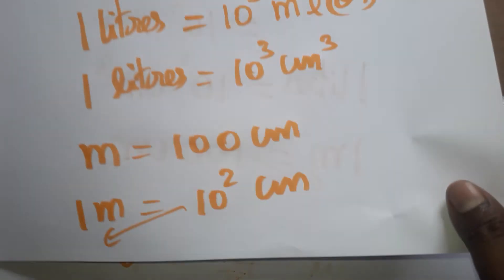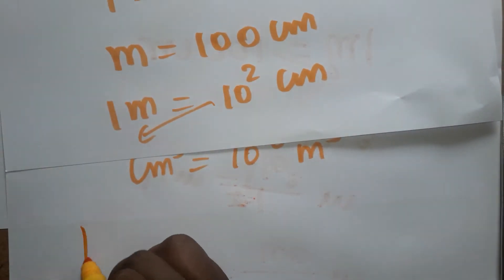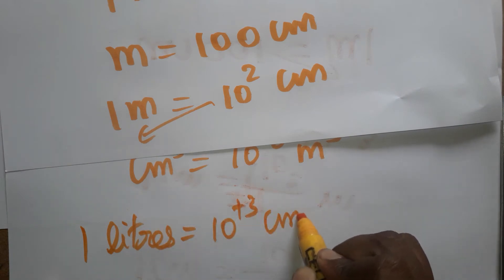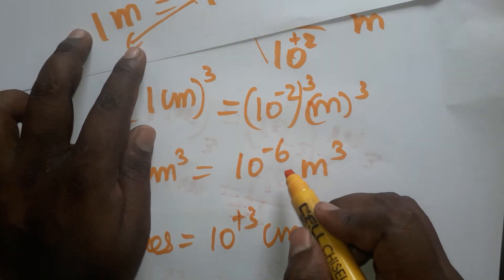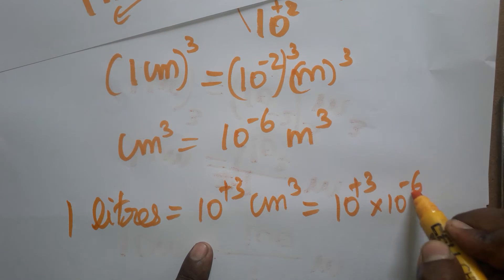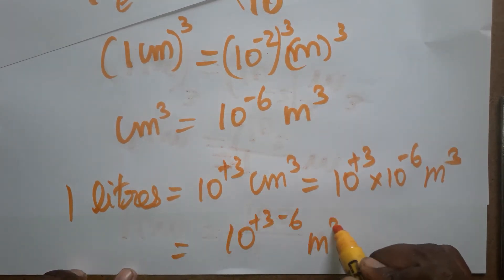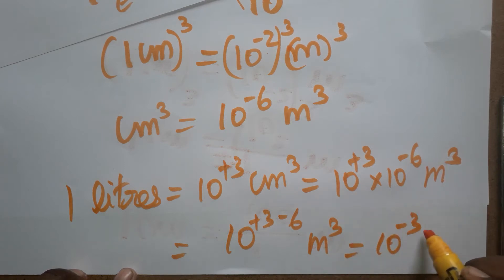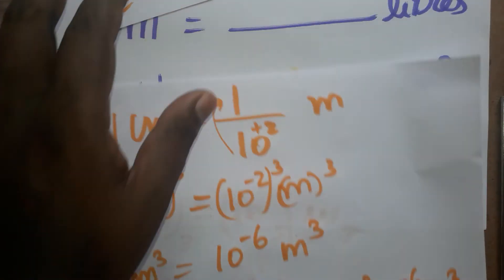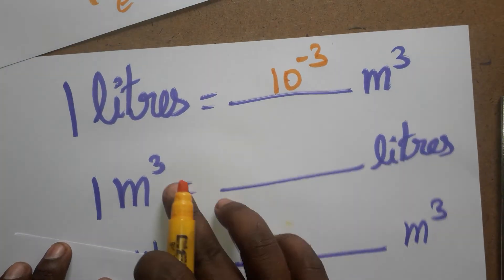So we have one liter equal to ten power three centimeter cube, and one centimeter cube equal to ten power minus six meter cube. Multiplying: one liter equals ten power plus three into ten power minus six meter cube, which gives ten power minus three meter cube. So one liter is equal to ten power minus three meter cube.